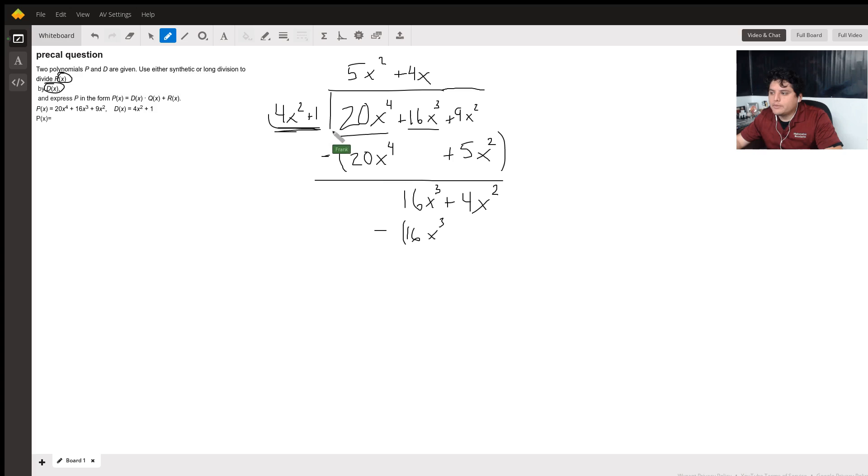Anyway, 4x times 1 is just going to be 4x. So I'm going to write it over here, 4x. And I write it all the way towards the end because again, here's the x squared, my x's would be over here. When I subtract them, the 16x cubes go away.